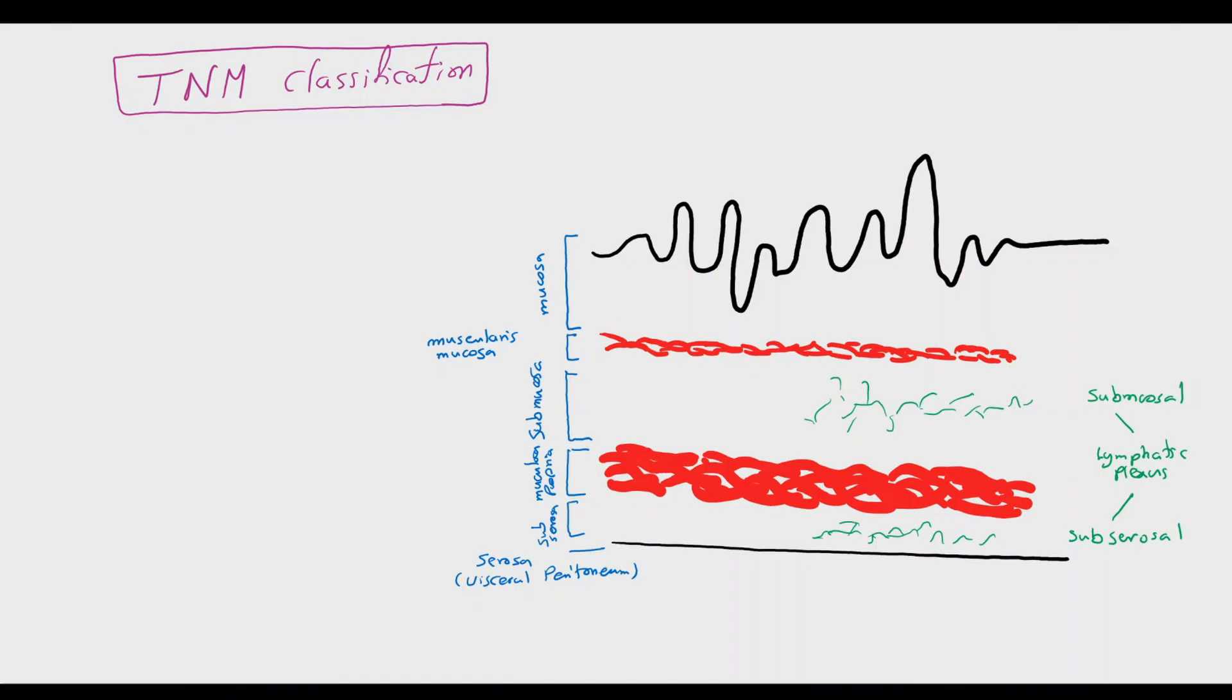The T component of the TNM classification represents the depth of tumor penetration. T1A is tumor confined to the mucosa, not reaching the submucosa. T1B reaches the submucosa, penetrating the muscularis mucosa.